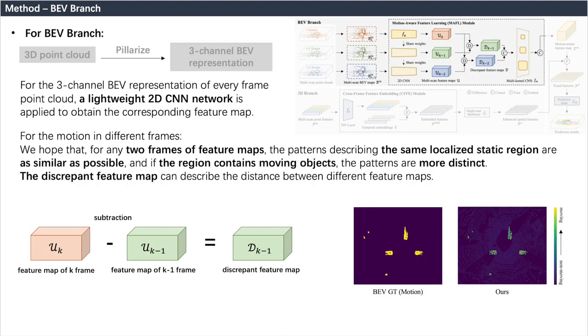For the BEV representation of every frame point cloud, a share-weighted lightweight 2D CNN network is applied to obtain the corresponding feature map. For the motion in different frames, we hope that for any two frames of feature maps, the patterns describing the same localized static region are as similar as possible, and if the region contains moving objects, the patterns are more distinct.